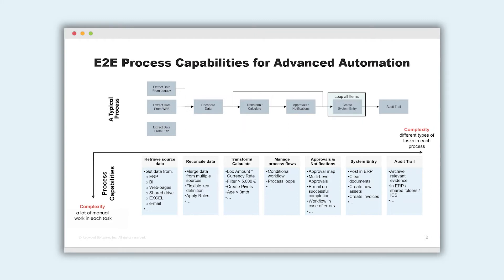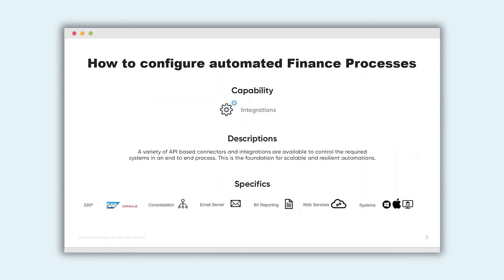Now let's look at how this is done within Redwood. The fundamental nature of the Redwood automation platform is that it is based on integrations. We automate based on APIs and connectors, with a variety of integrations that allow us to automate processes across a large number of systems — including connectors for common ERP systems, email servers, web services, BI reporting tools, consolidation tools, and more. Based on these API integrations, customers can build automations and automated tasks.